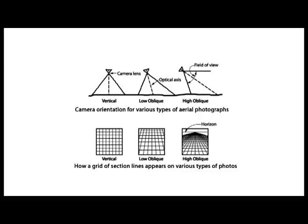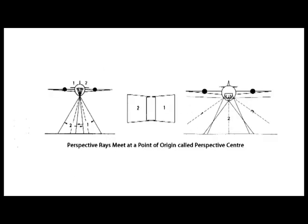Geometry of aerial photograph: the quantitative analysis includes measurements of linear distances, angles, and height differences of objects on the terrain, as well as preparation of base maps. An aerial photograph is a central or perspective projection where bundles of perspective rays meet at a point of origin called the perspective center. A map is an orthogonal projection where every point on the ground is projected vertically onto the map on a reduced scale. One great advantage of central projection is its ability to produce a three-dimensional model of the terrain under stereoscopes.